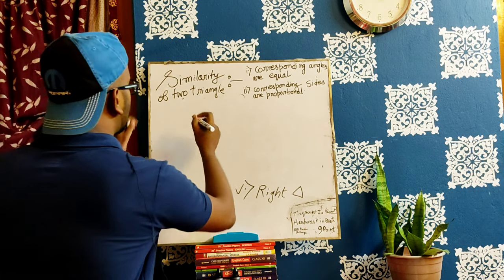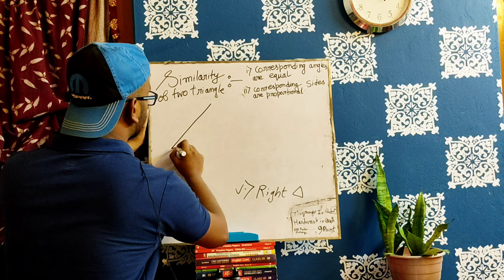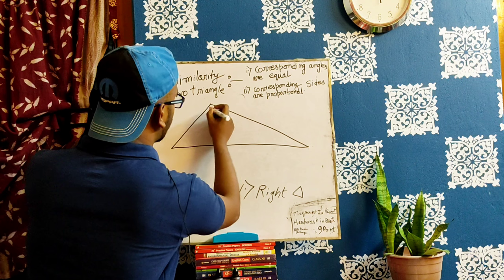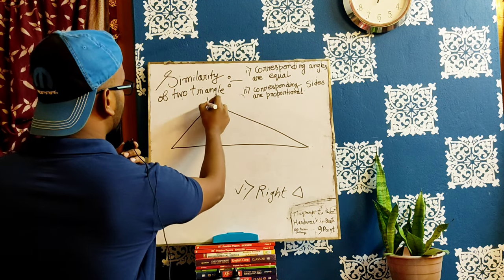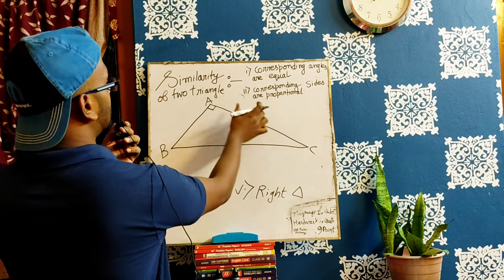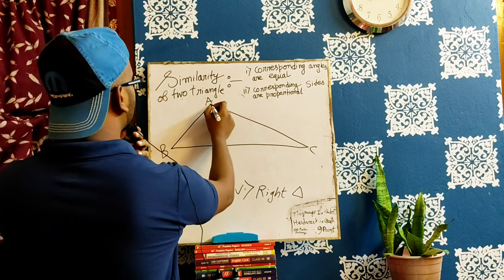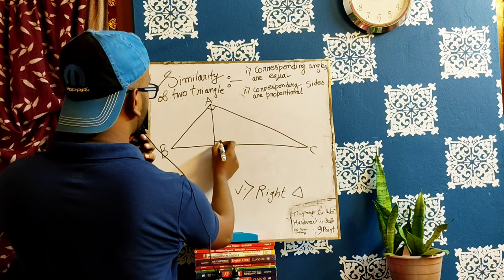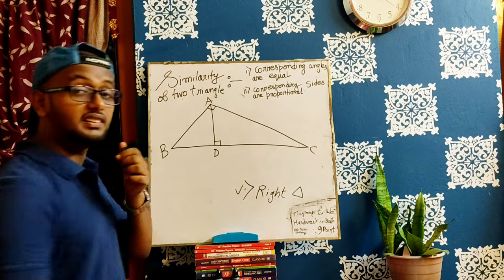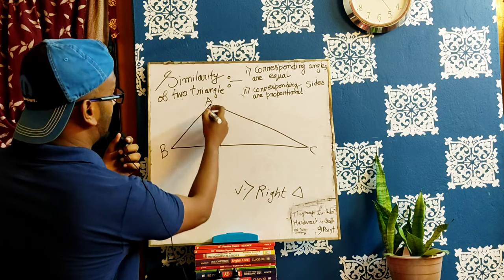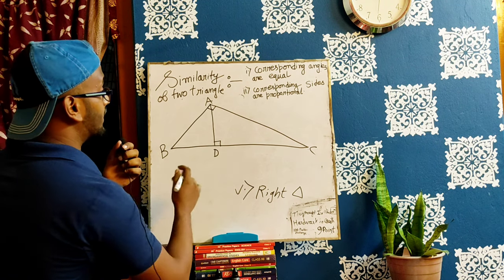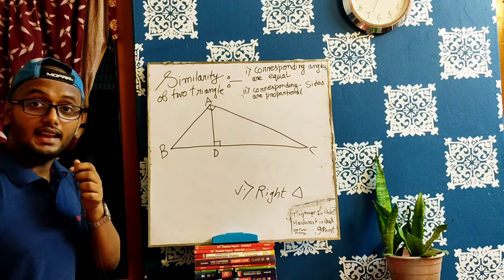Now let's look at a specific case of similarity involving the right angle triangle. In a right angle triangle ABC, we have a base, a pair of perpendiculars, and a hypotenuse. If you have 90 degrees you can draw a triangle; if you drop a perpendicular from the right angle to the hypotenuse, this triangle is similar to the original.